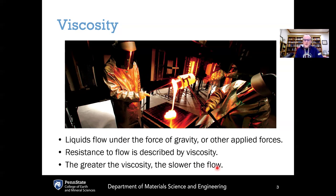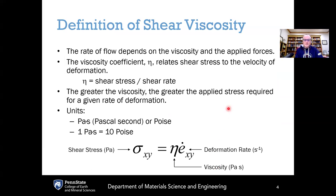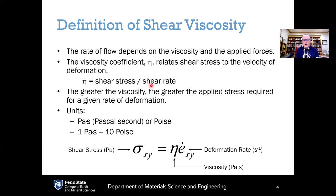Something like water at room temperature has a very low viscosity because it flows quickly. Something like honey has a much higher viscosity because it flows more slowly. When we say viscosity, almost all the time what we really mean is the shear viscosity, specifically the coefficient of shear viscosity, which is given by eta. This is defined as the shear stress divided by the shear strain rate. The greater the viscosity, the greater the applied stress required for a given rate of deformation.